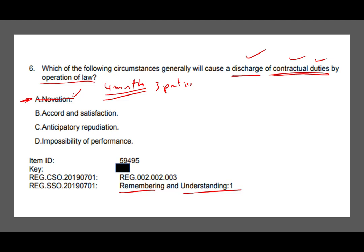The second answer is accord and satisfaction. This is also a discharge of your contractual obligation, but what you're doing is substituting your previous performance with a new one. For example, if I owe you $1,000 but don't have the money, I could offer to paint your home instead. If you agree, you discharge me. This is accord and satisfaction — I substitute my original performance with a new performance. This is also not by operation of law because we agreed upon it, so B is out.